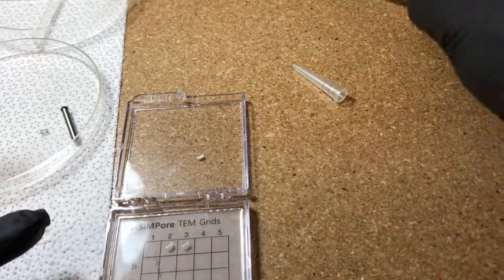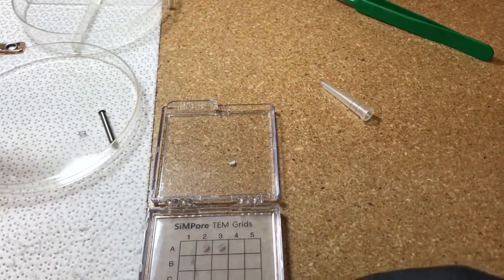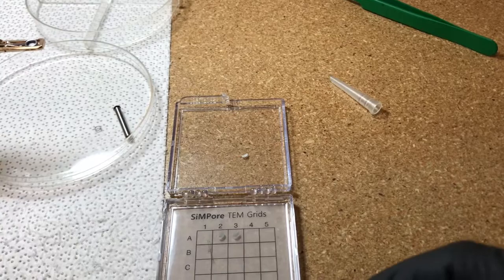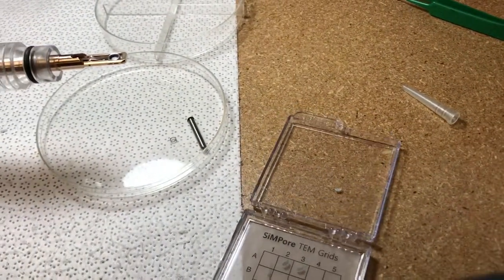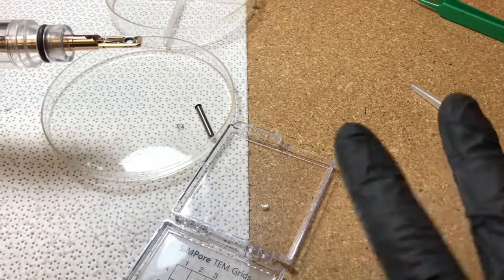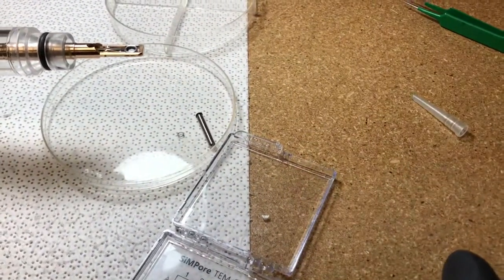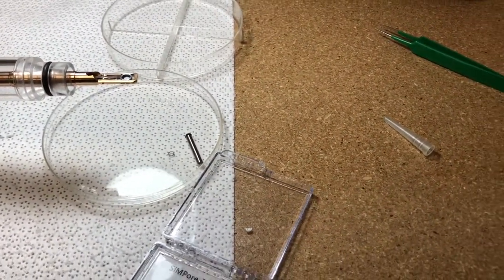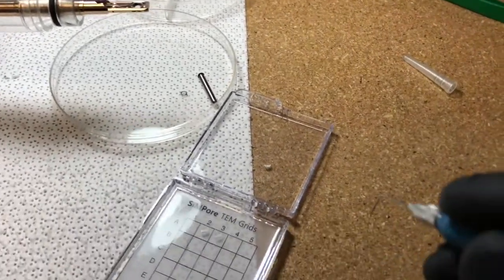Now I'm going to use the vacuum tweezers to pick that up and put it into the basket. I'm going to orient this how I want it. You can see I have the fingers oriented like that. I'll turn on my vacuum tweezers.